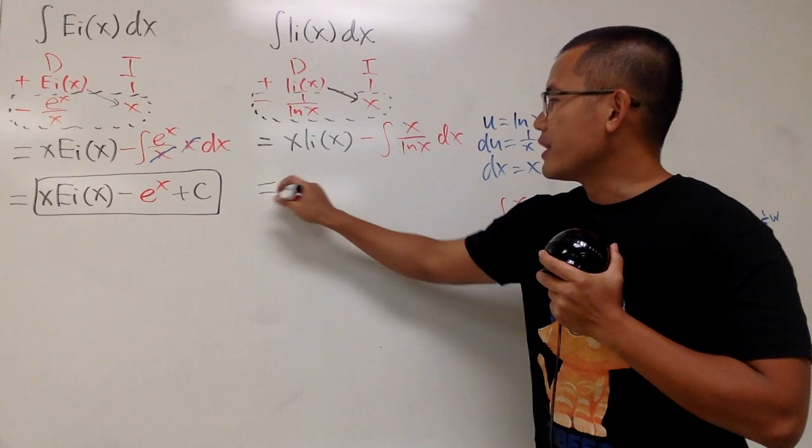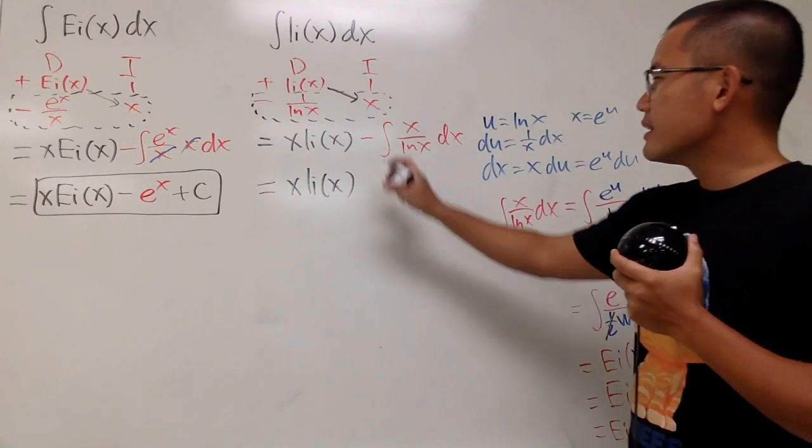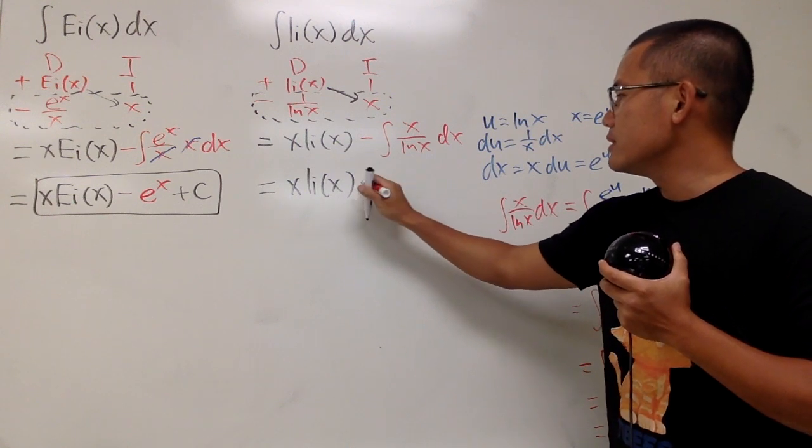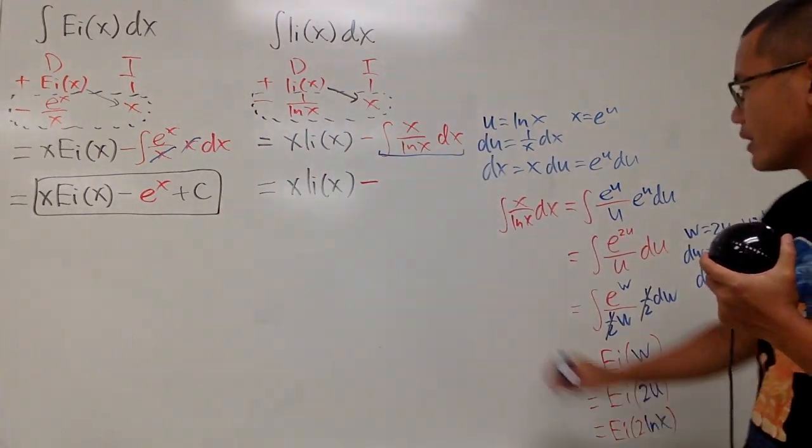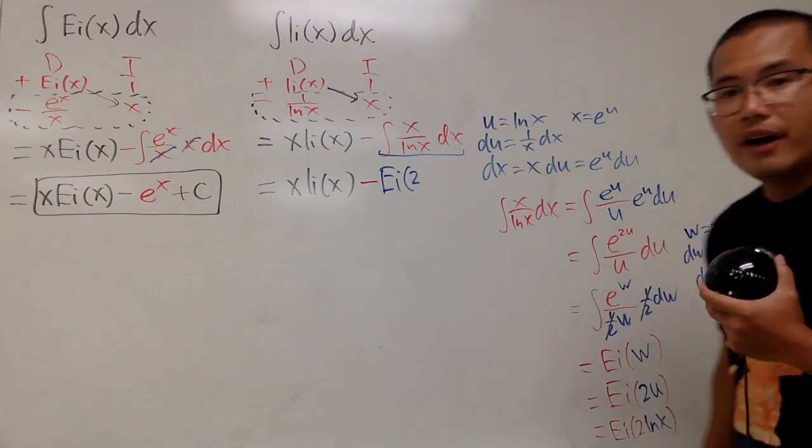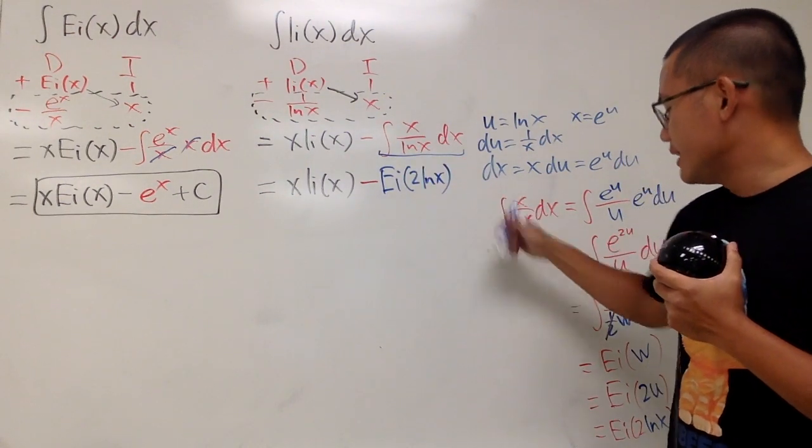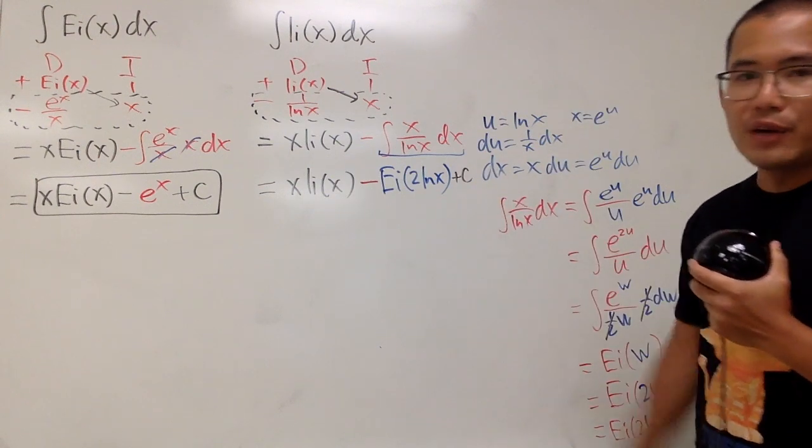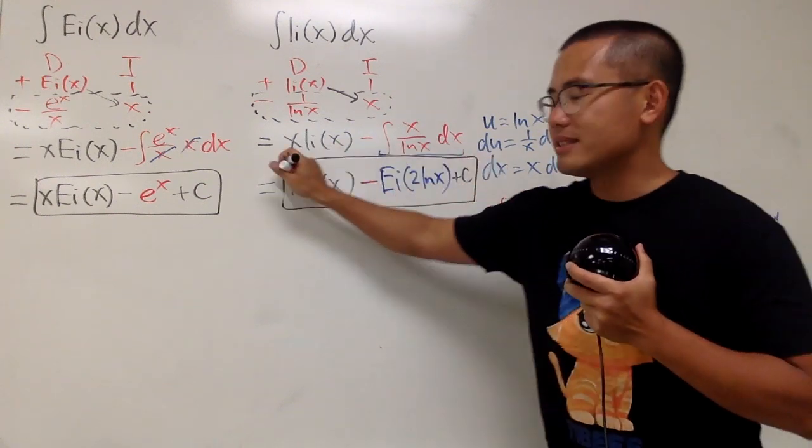Finally, the answer right here is x times li(x). And this is the minus right here, so I will put this down, minus. And perhaps I'll just make this blue. This part, that one. Namely, ei(2ln(x)). Very, very nice. And then in the end, of course, don't forget the plus c. Very good. Even though we are using special functions, but still, plus c, plus c, plus c.